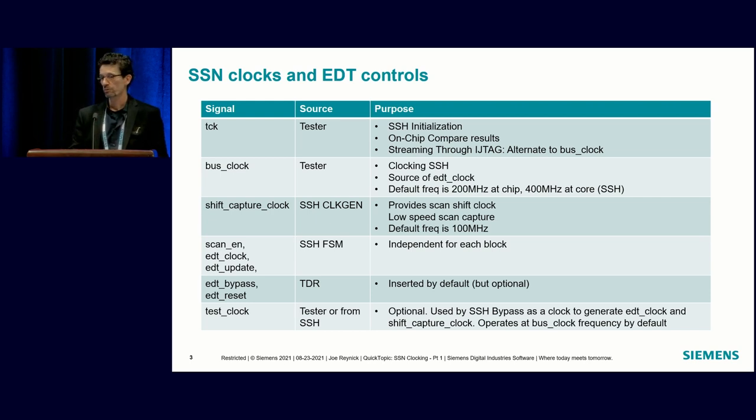Shift capture clock is produced by the SSH and this is going to do your shifts or your slow capture. We have a finite state machine that does some of these other standard EDT signals, and some signals we need to control are typically through a test data register.